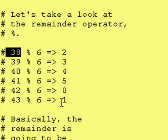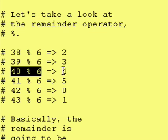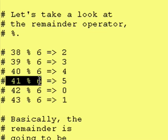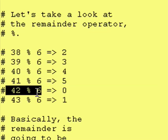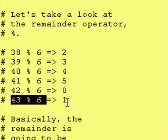For example, if you take 38 and you divide it by 6 and you say I only want the remainder, your answer is 2. If you take 39 and you divide it by 6 and you say I want the remainder left over, you're going to get 3. 40 divided by 6, the remainder is 4. 41 divided by 6, the remainder is 5. 42 divided by 6, there's going to be no remainder because it goes in 7 times evenly. And 43 divided by 6, the remainder is 1.